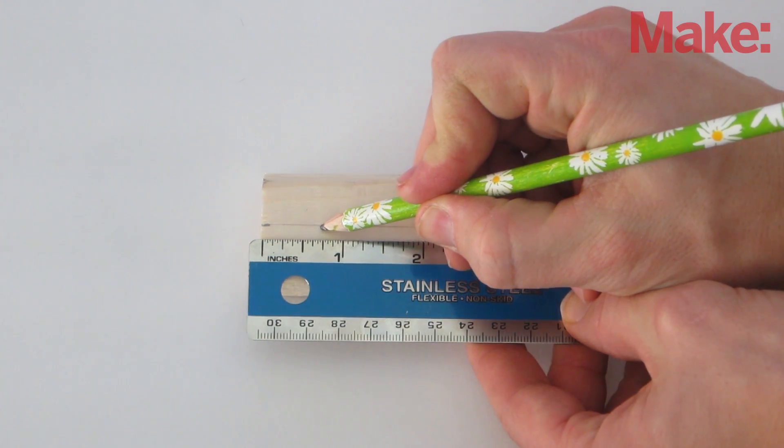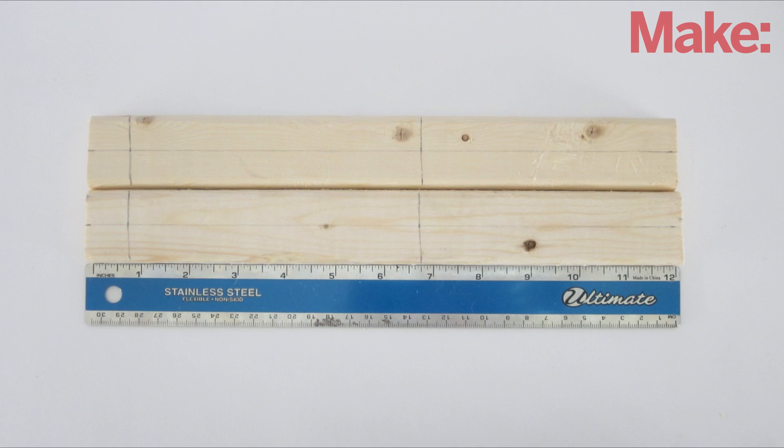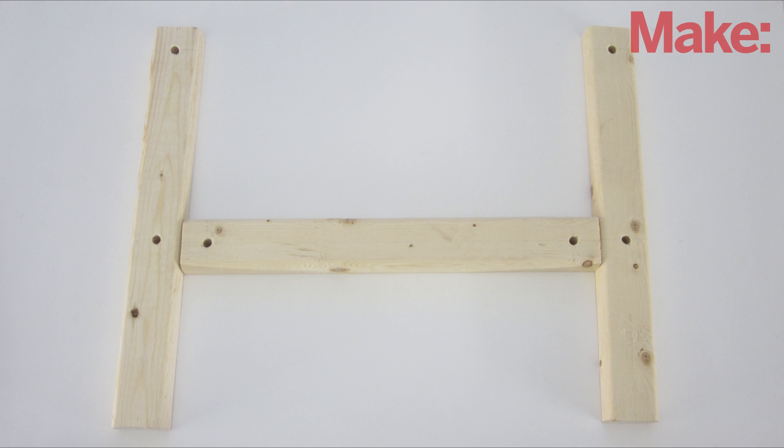On the other two pieces, make one mark that's 3 quarters of an inch from the left side, and a second mark that's 6 and 3 quarters of an inch from the left side. These will be the side boards. Drill a quarter inch hole in each of these locations.